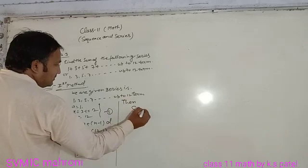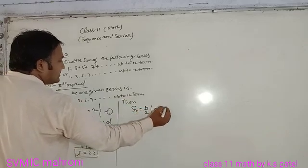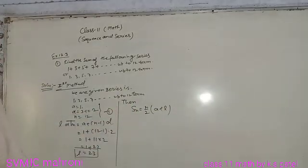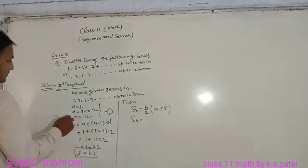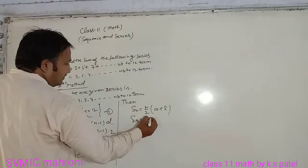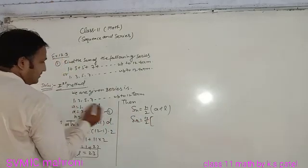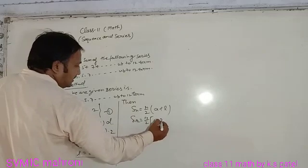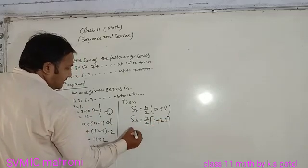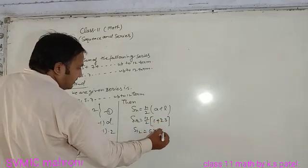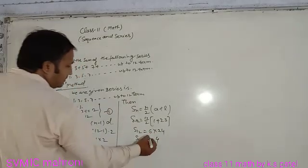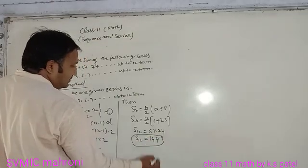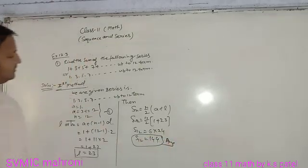Sn is equal to n/2(a+l), the second formula of sum of arithmetic progression. S12 is equal to 12/2(1+23). S12 is equal to 6 into 24. S12 is equal to 144. This is complete solution.